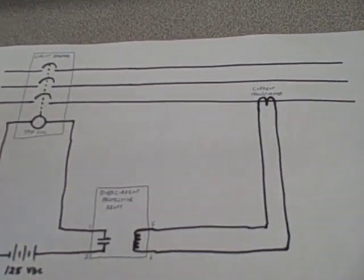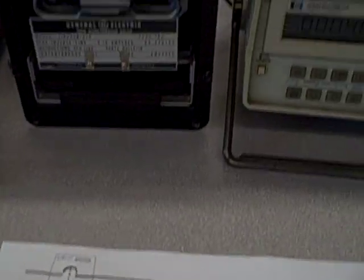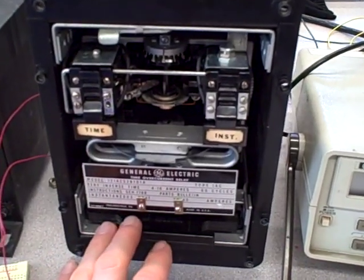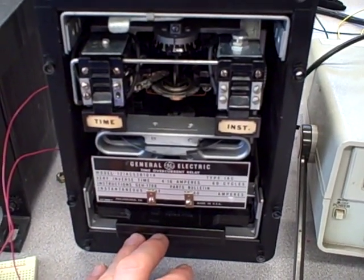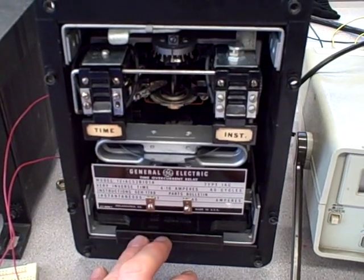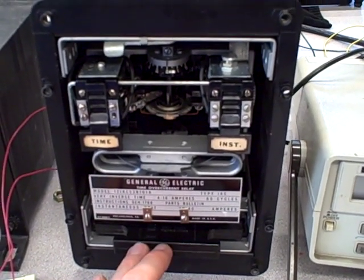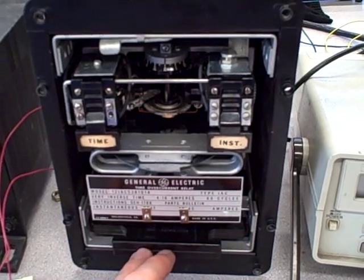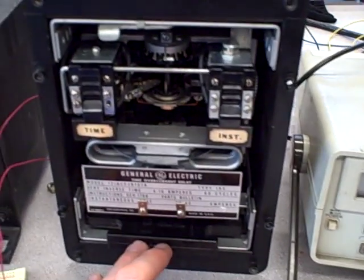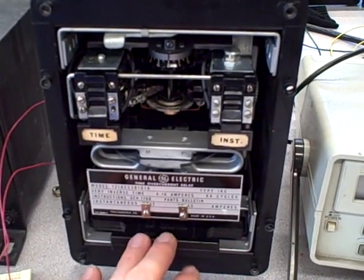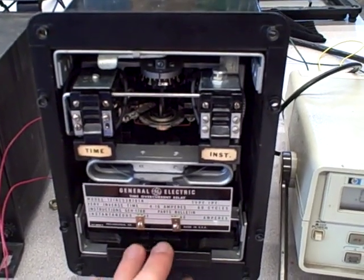A panel mounted instrument in mind here would be something like this protective relay, this 50-51 instantaneous overcurrent, time overcurrent protective relay. This needs to sense the amount of current going through one of the three phase lines in a power system. But as I said, it would be impractical to run that power conductor straight through this panel mounted device.